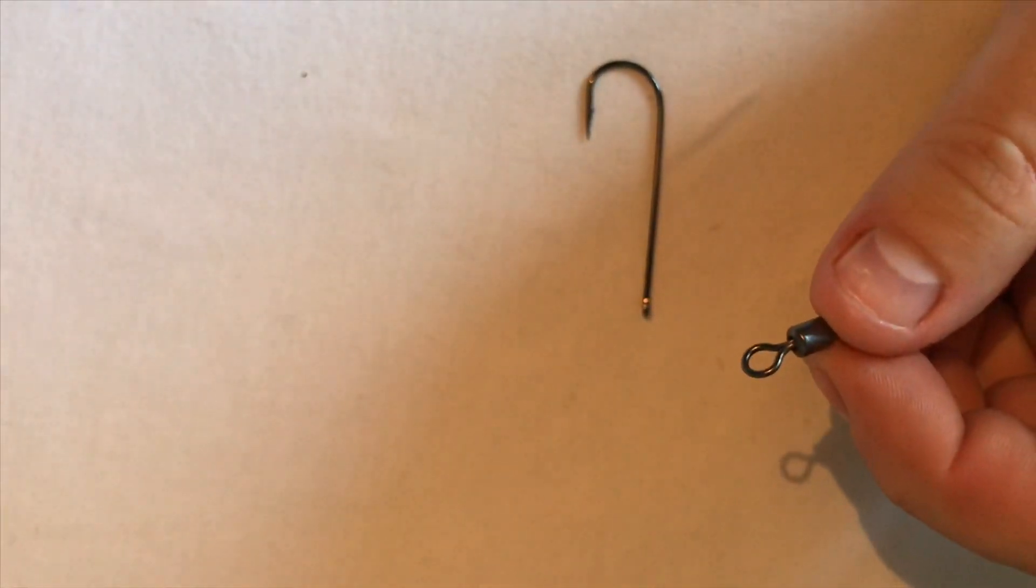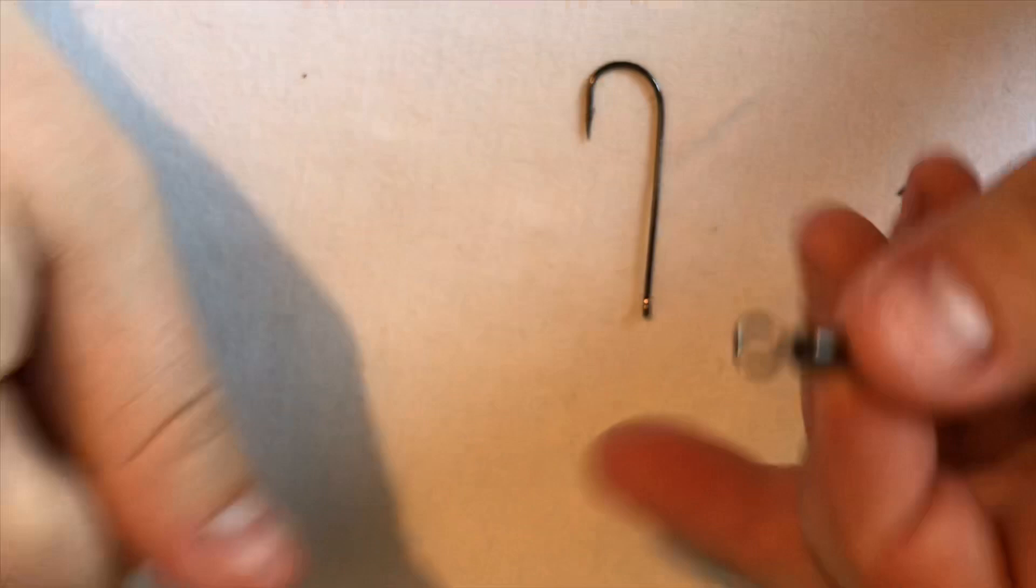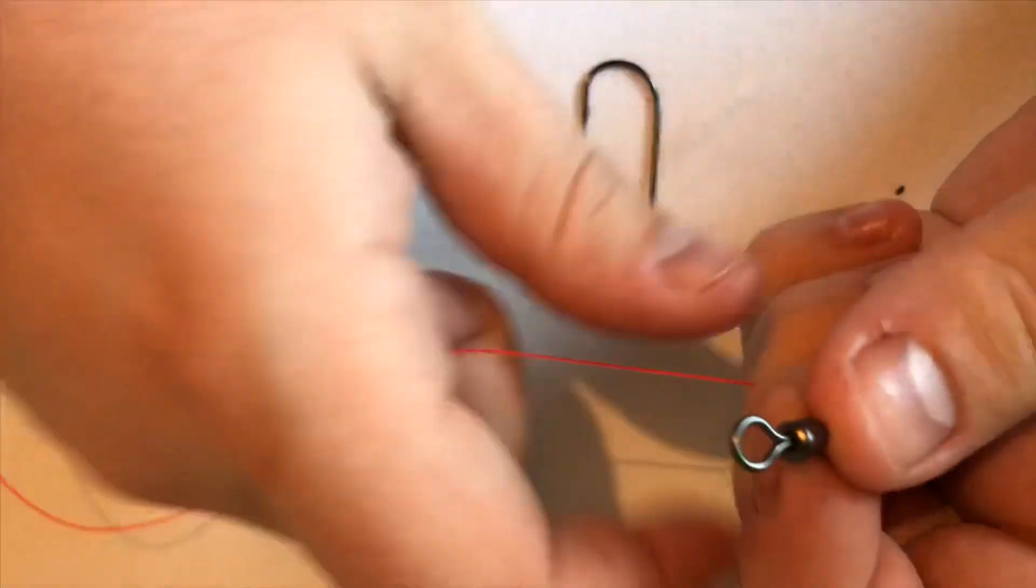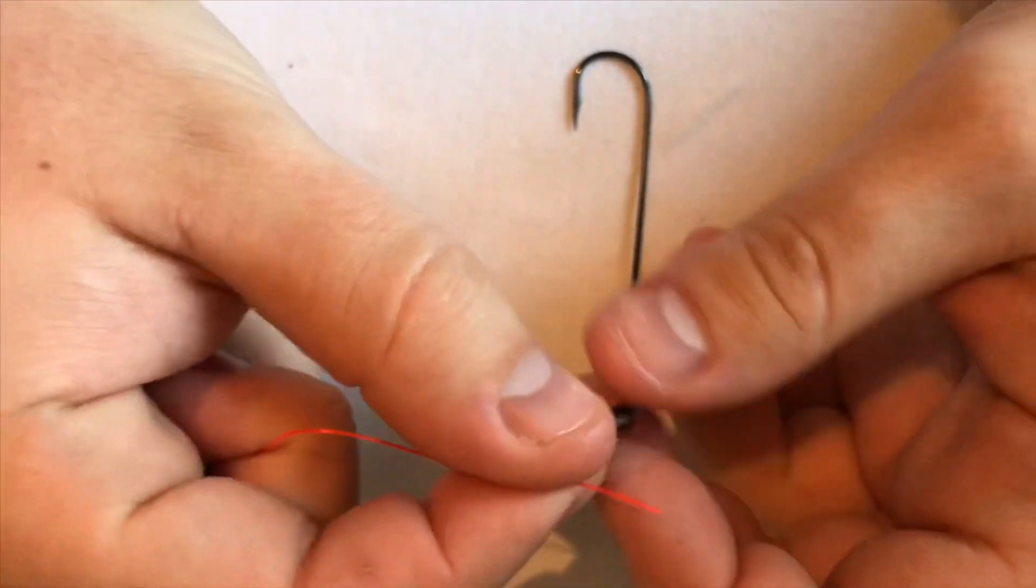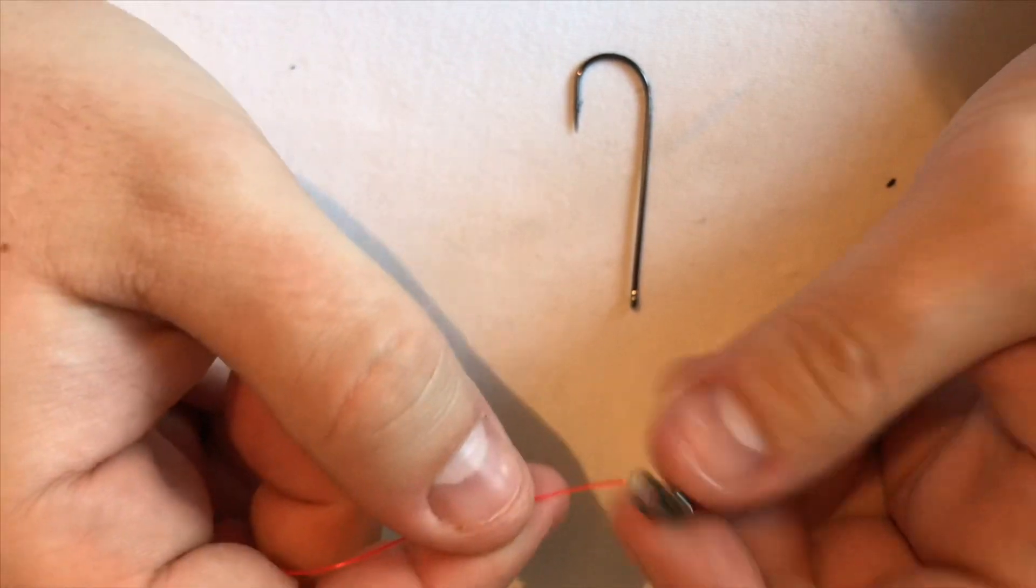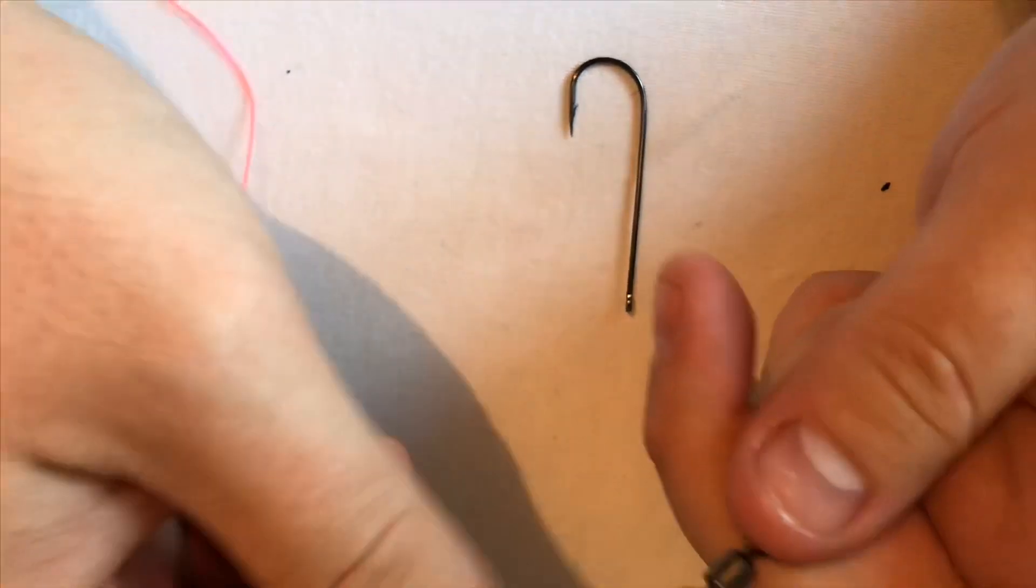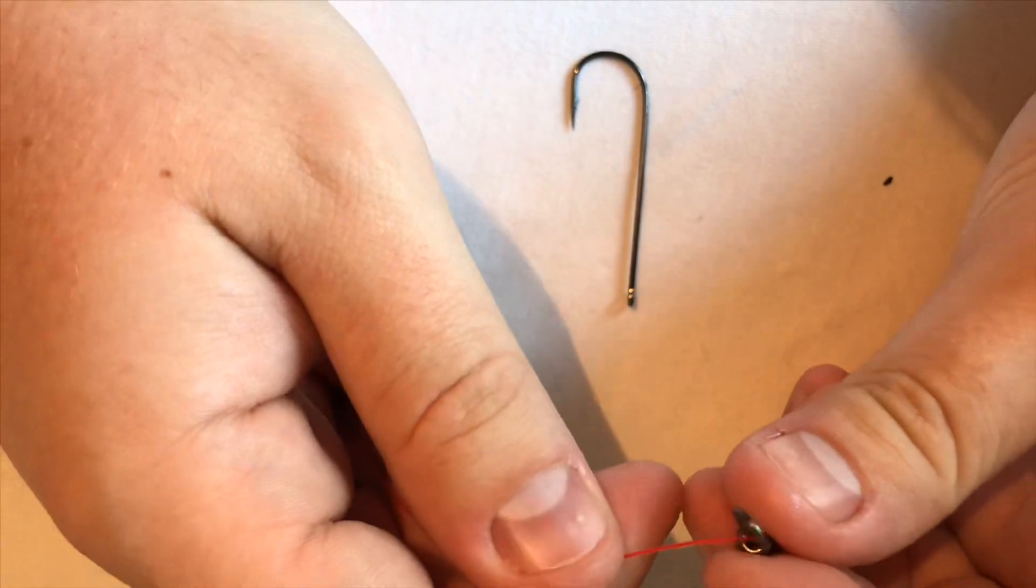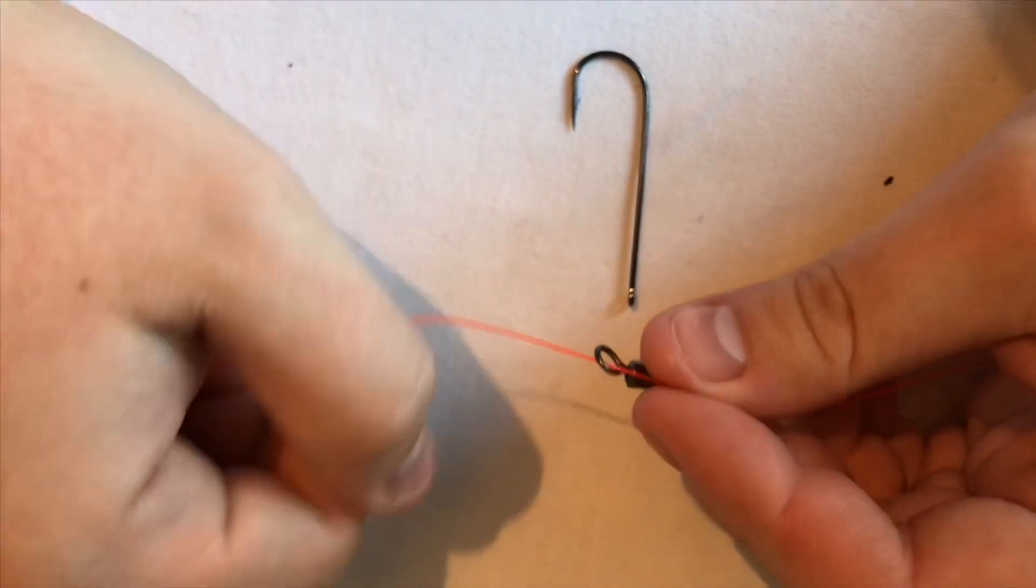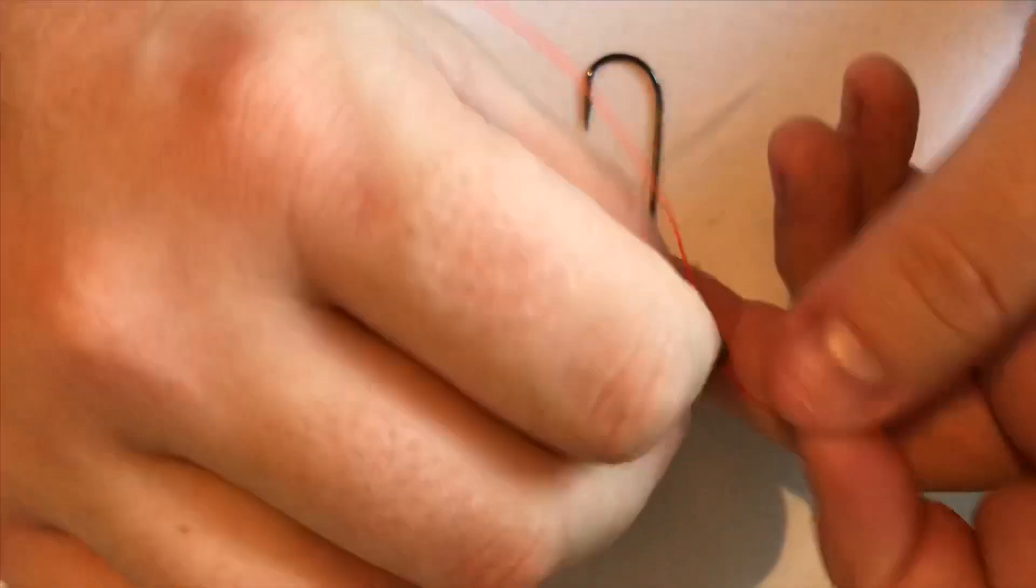You then want to get a piece of line, which is 20 pound amnesia. I've got about 20 inches in length. You use the same knot to tie it to the swivel again.